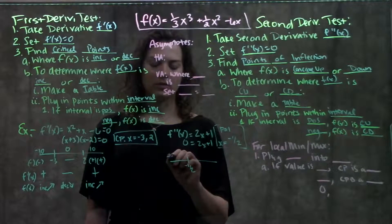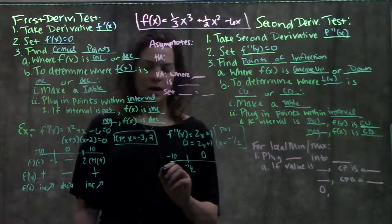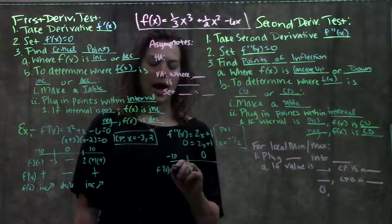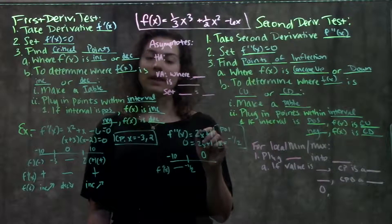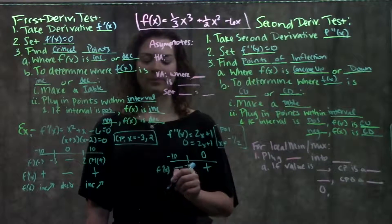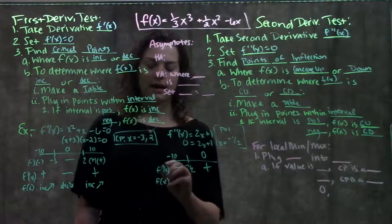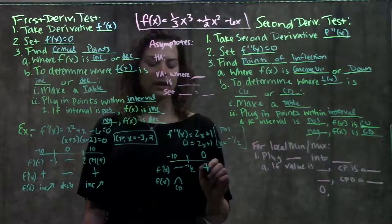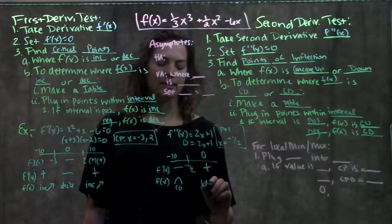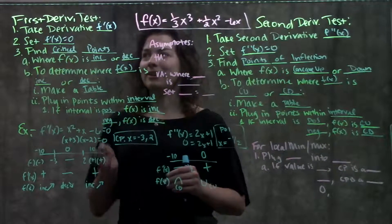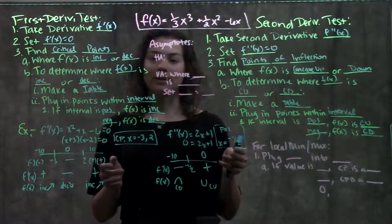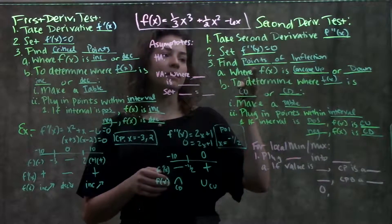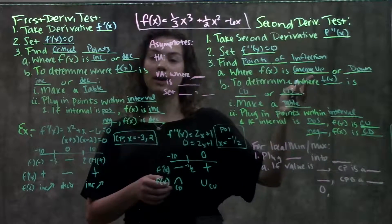To determine where my original function is concave up or concave down, I make a table, put in my point of inflection, and plug in test points on either side into my second derivative. Plugging in x equals negative 10, I get negative 20 plus 1, which is some negative value — so f double prime is negative on this interval, meaning my original function is concave down. Plugging in 0, I get positive 1, so f double prime is positive, meaning my original function is concave up. The second derivative test gives us points of inflection and tells us where f of x is concave up and concave down.